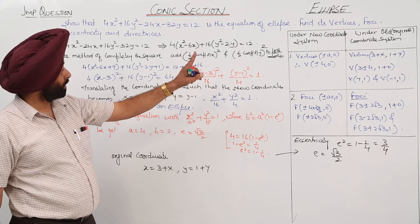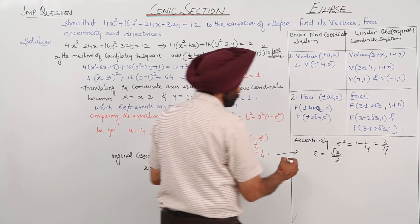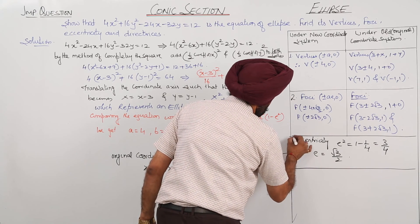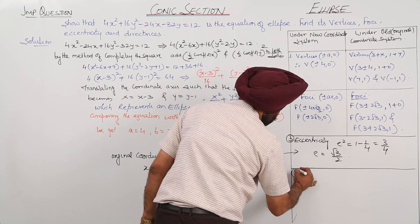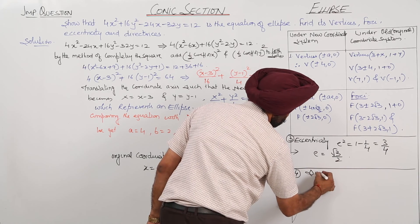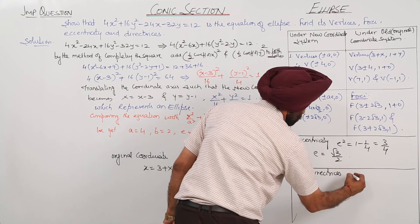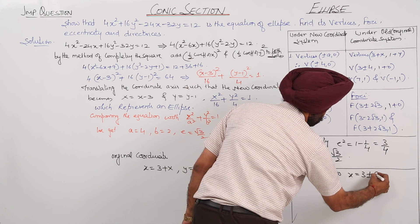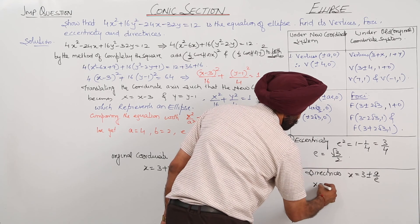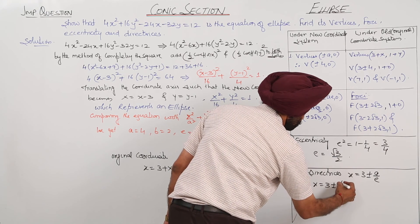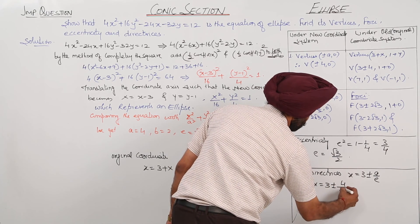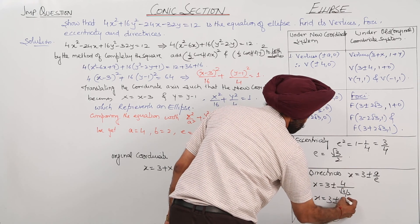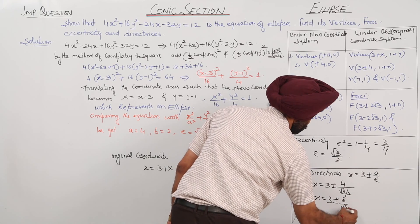Number 4: directrices. In original coordinates the directrices are x = 3 ± a/e = 3 ± 4/(√3/2) = 3 ± 8/√3.